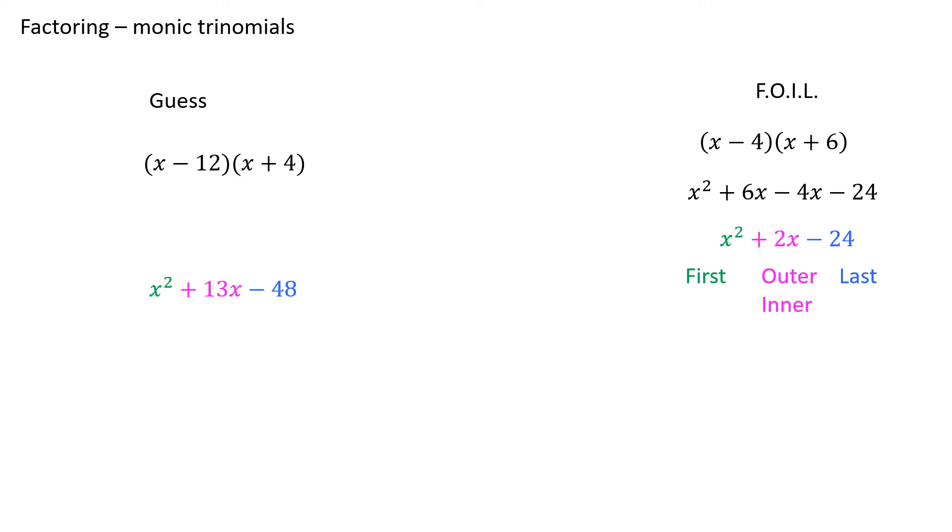So I've made this guess because the product of the first two terms would be x squared, and the product or multiplication of the last two terms would be negative 48. Now you'll notice here that I chose negative 12 times 4 to make negative 48, which is true, but also notice it's not the only two numbers that multiply together to make 48. But I want to reinforce here that this is just a guess.